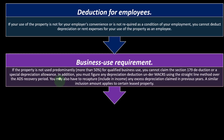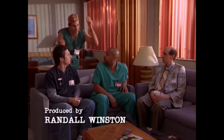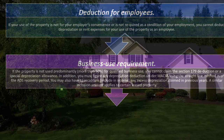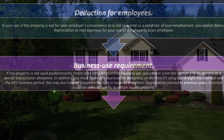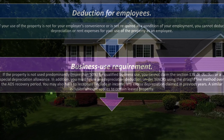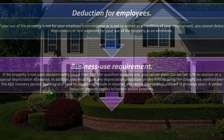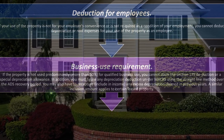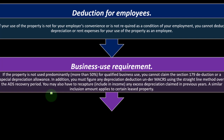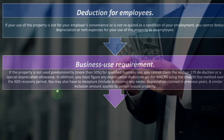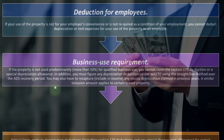Because of the nature of these items, the IRS is skeptical of someone taking those large depreciations in year one. If the property is not used predominantly — more than 50% — for qualified business use, you cannot claim the Section 179 deduction or the special depreciation allowance. In addition, you must figure any depreciation deduction under MACRS using the straight-line method over the ADS recovery period. Note that normally this property might use GDS and the double-declining method, but they restrict that to straight-line ADS recovery. You may also have a recapture — including in income any excess depreciation claimed in previous years. A similar inclusion amount applies to certain leased property.